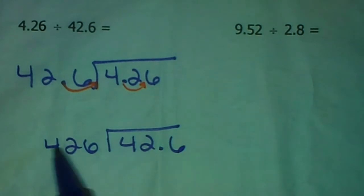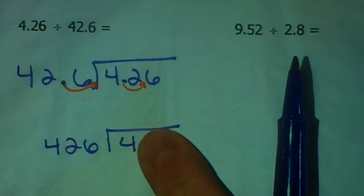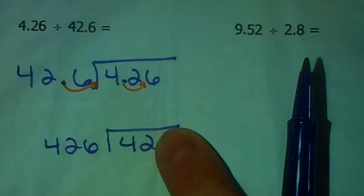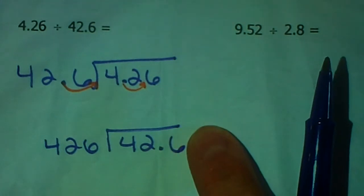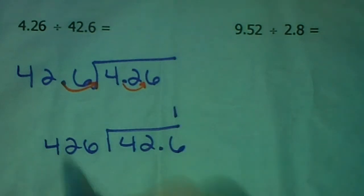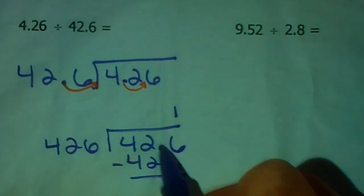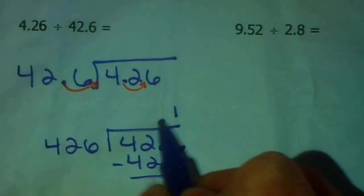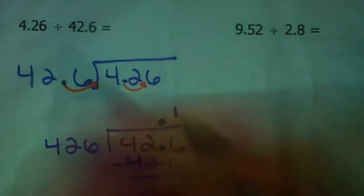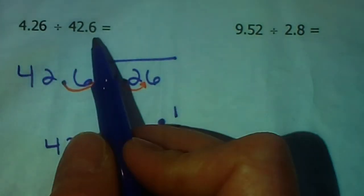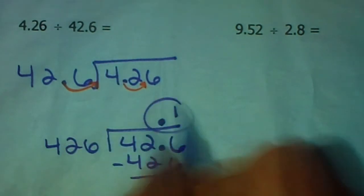So the problem that we're actually solving here is 42.6 divided by 426. Okay, so 426 does not go into 4. It does not go into 42. It does go into 426 one time. So 426 times 1 is 426. We subtract and get a 0 remainder. And if you notice, inside here, the decimal point is between the 2 and the 6. You need to just bring it up. So wherever it is inside, you bring it up to that same exact spot. So 4 and 26 hundredths divided by 42 and 6 tenths is 1 tenth.